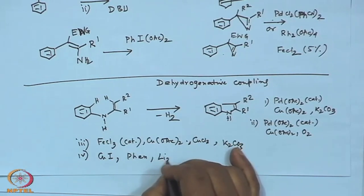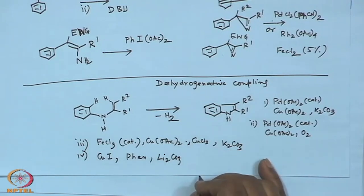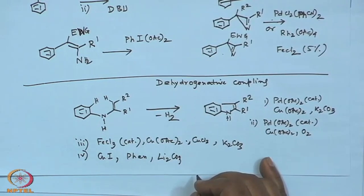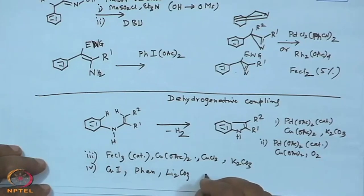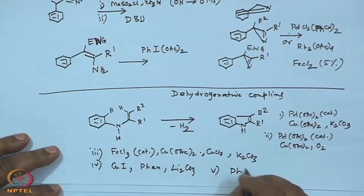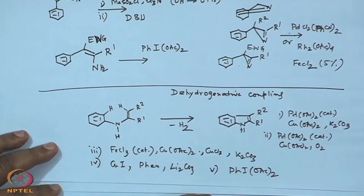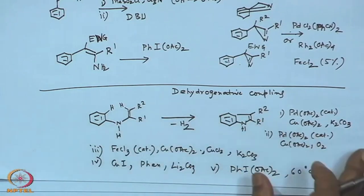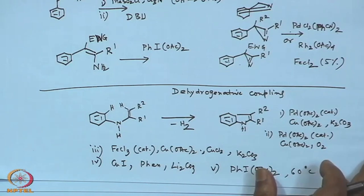One less common combination uses cupric iodide and 1,10-phenanthroline with lithium carbonate, since it is more soluble in organic solvents. Another popular one uses phenyl iodine diacetate, which works at as low as 60 degrees centigrade. Mechanistically, the first step involves palladation — palladium acetate reacts at the nitrogen, and after rearrangement you get palladium incorporated at the beta position with respect to nitrogen.